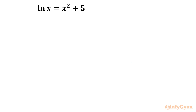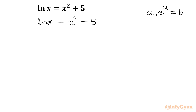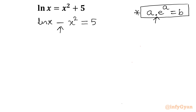Let me start by rewriting this equation as ln(x) − x² = 5. Why am I writing it this way? Because I am recalling the form a·e^a = b, and that is what I am targeting. The point is here I have a minus sign, but I need a dot product. So by algebraic manipulation, I will try to convert this minus sign into a product form. This is the important lesson from this question — how we can convert a plus or minus sign into product form.